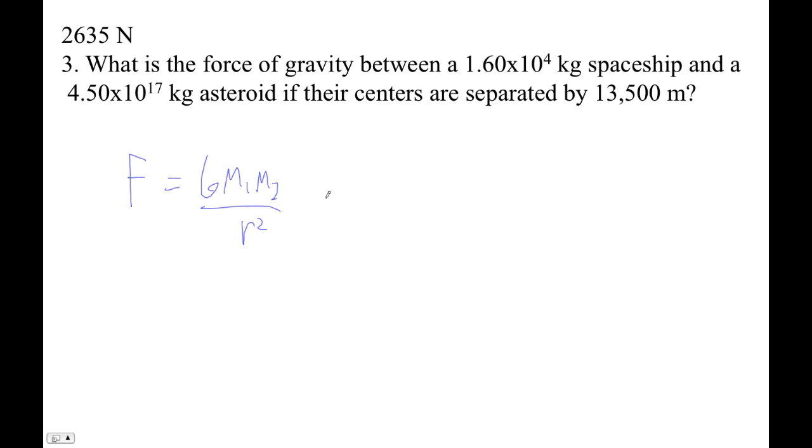Don't forget to square the R. So this will be 6.67 E minus 11 times the first mass, which is 1.6 E4, times the second mass, which is 4.5 E17. And then their centers are separated by 13,500. Don't forget to square that thing.